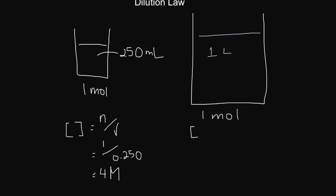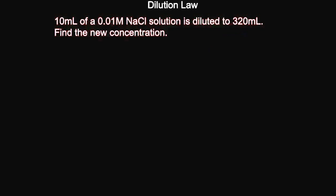So, again, my concentration is N on V, which is 1 on 1 is 1 mole. Now, that's easy enough to work out, but what happens when the numbers we're dealing with aren't quite so pretty? So, I have 10 mL of a 0.01 molar sodium chloride solution and that gets diluted to 320 mL. I need to find the concentration of my new solution.